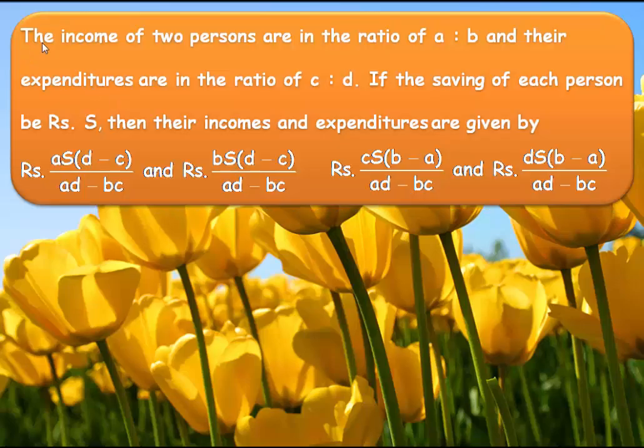The model is: if the income of two persons are in the ratio a:b and their expenditures are in the ratio c:d, and if the saving of each person is Rs. S, then their incomes and expenditures are given by Rs. aS(d-c)/(ad-bc) and Rs. bS(d-c)/(ad-bc); Rs. cS(b-a)/(ad-bc) and Rs. dS(b-a)/(ad-bc).